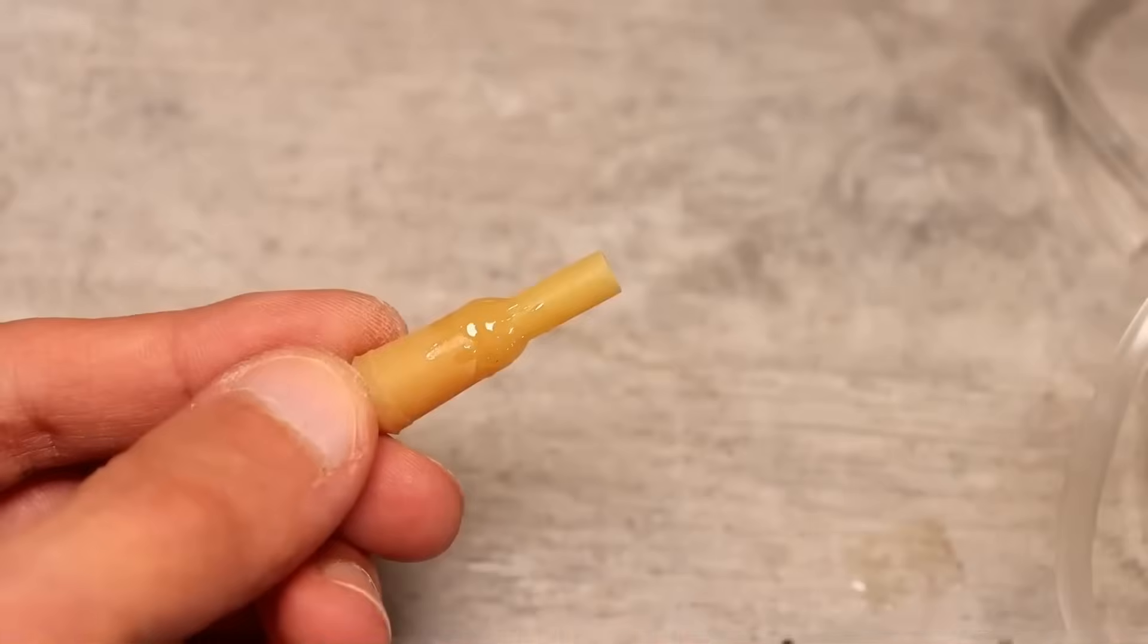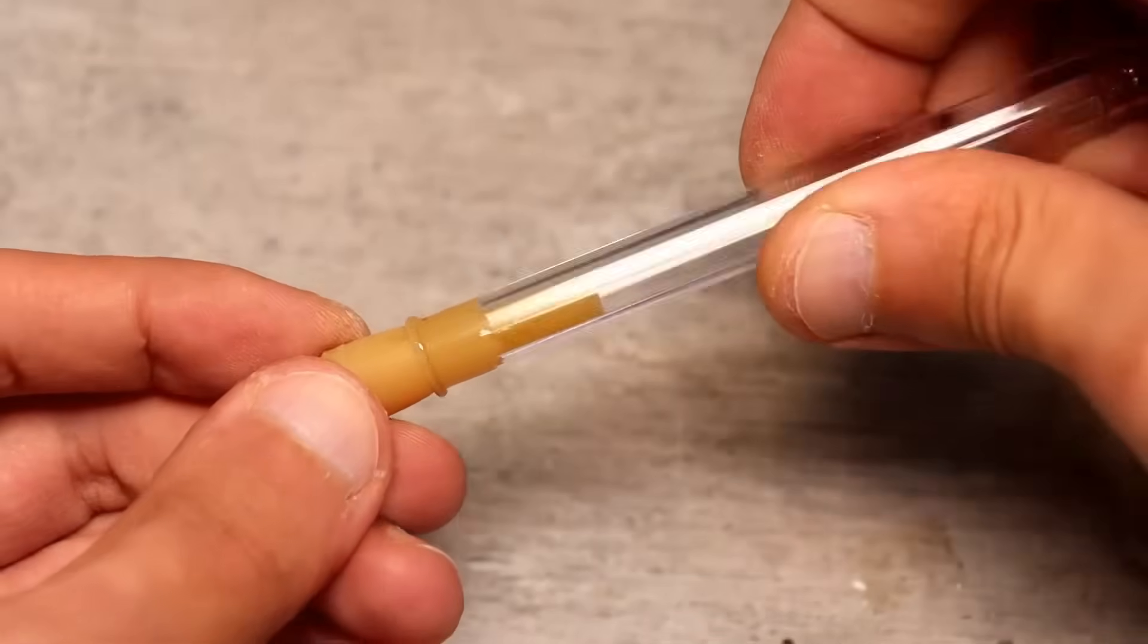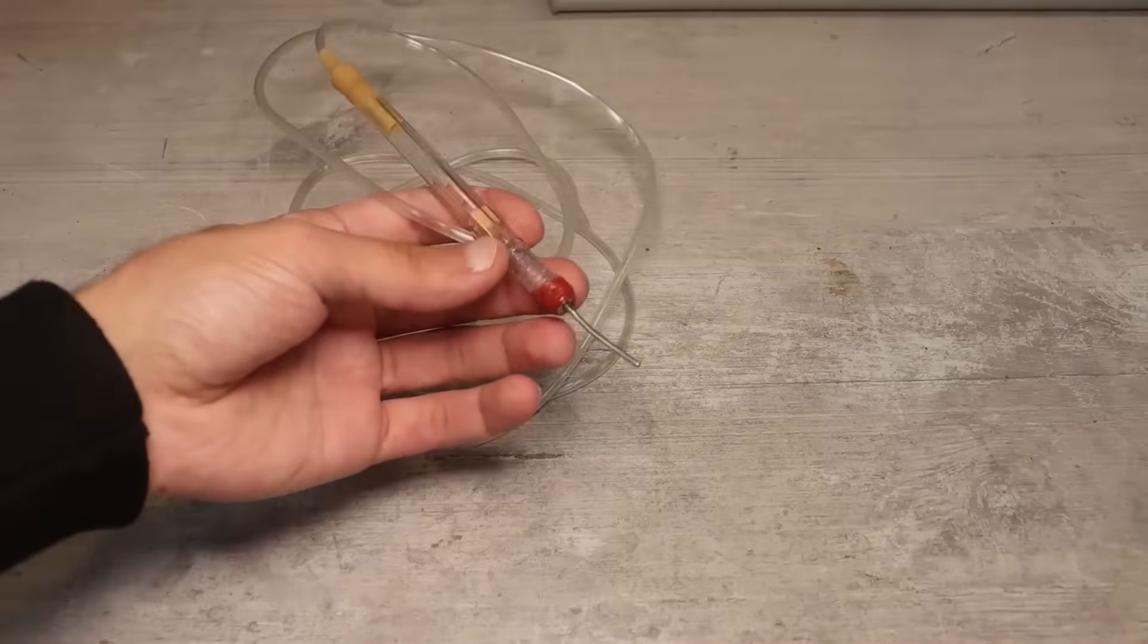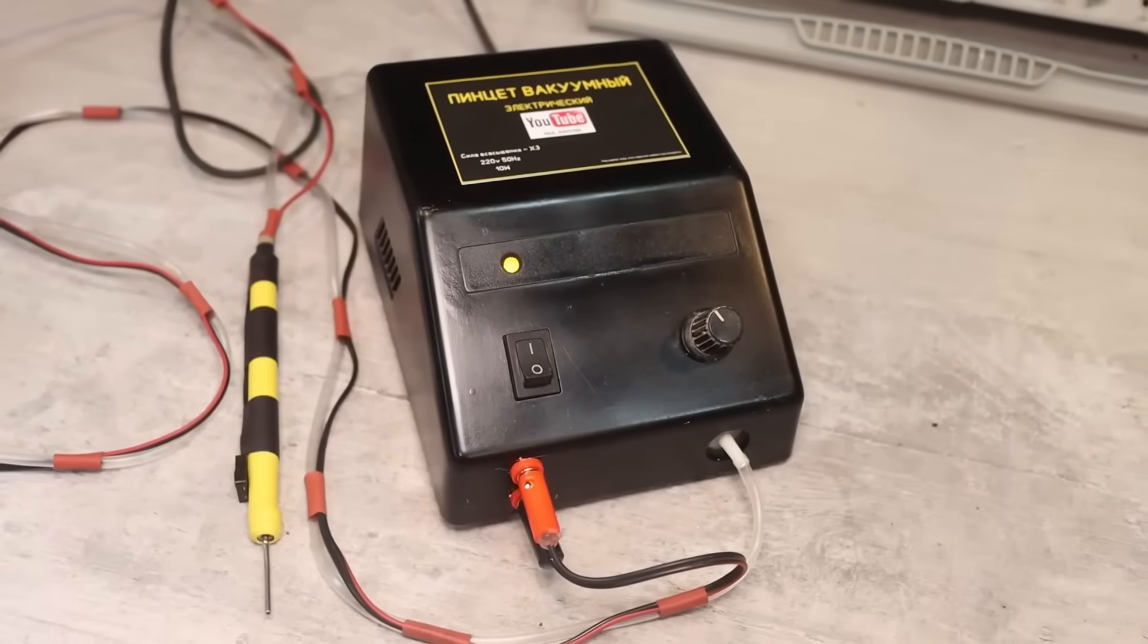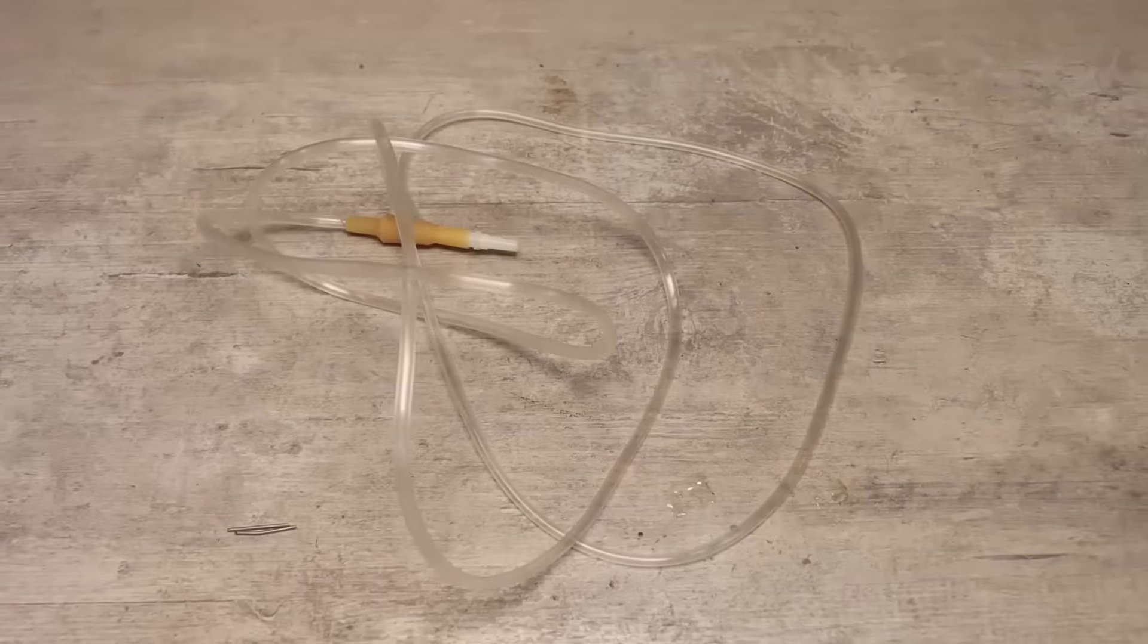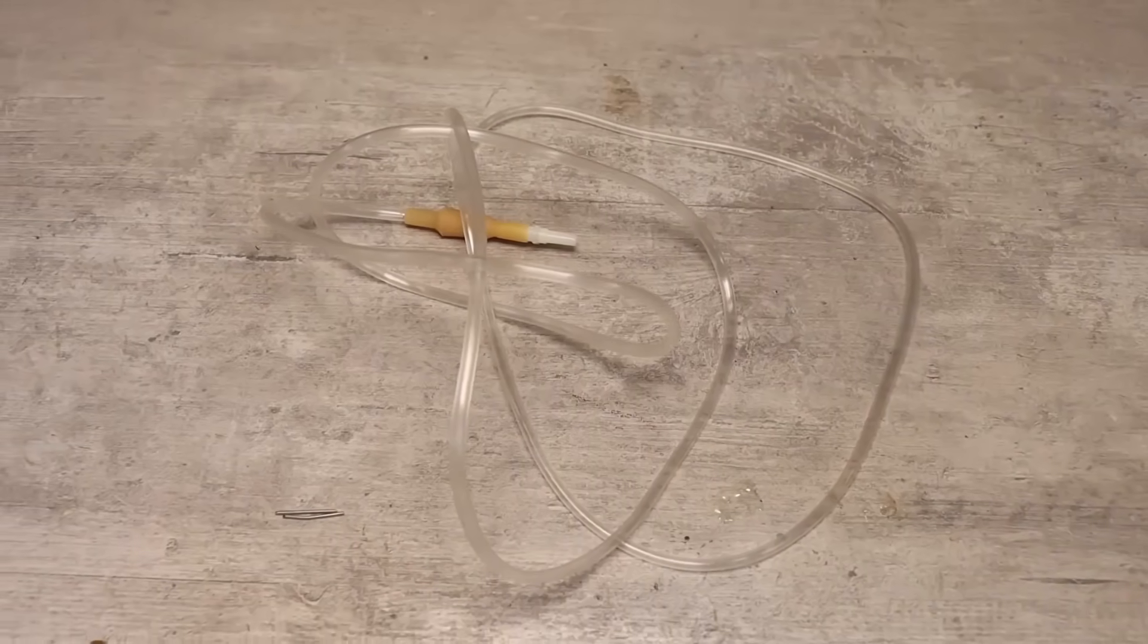Additionally, I coated everything with B7000 glue, although a sealant could also be used. Ideally, the main tube should be protected with an additional one that goes over it. But I didn't have anything suitable on hand, so temporarily, which means permanently, I'll leave it as is. The IV tube is very cheap, so I'll replace it if needed.